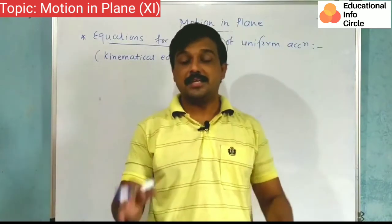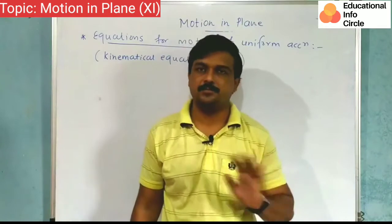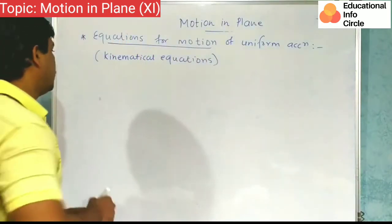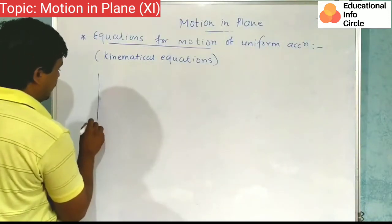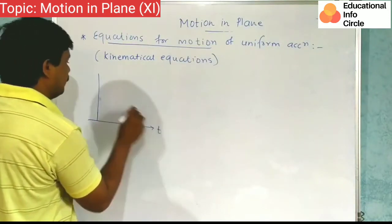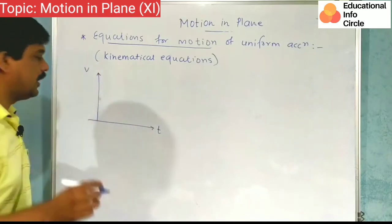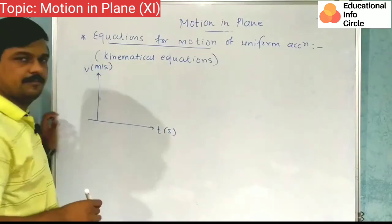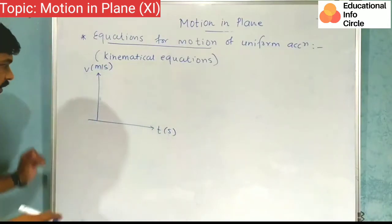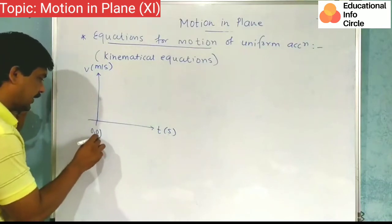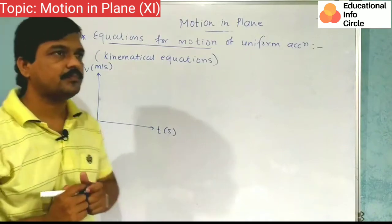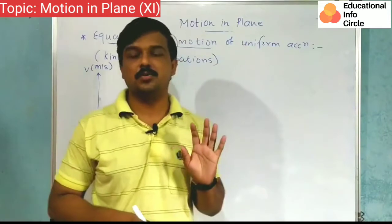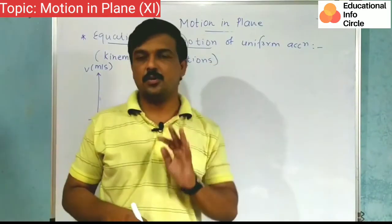These three equations are very simple. We'll use the graphical representation we covered earlier. The graph will be between time and velocity. Time is in seconds, velocity suppose in meter per second. Simple graph. This is our zero point. Now understand.